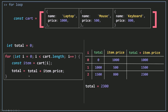If I run this code and console.log total, it's going to be 2300. What you've seen here is exactly what's going to happen with the reduce method, except total is going to be called an accumulator — this is where we accumulate the prices. We start from an array and end up with a single value, so you want to use reduce when you want to reduce an array to a single value.